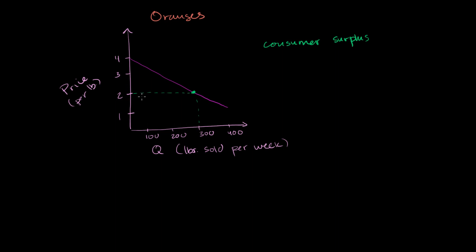So for example, the person who bought, let's just think about the exact 100th pound. The 100th pound, they paid $2, but their benefit looks like it was like, I don't know, $3.30.